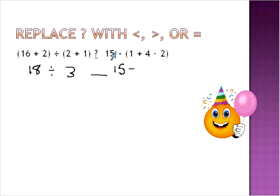The first operation that we'll do inside of these grouping symbols, inside of the parentheses, is the multiplication. We'll do that first, so we end up with 1 plus, 4 times 2 is 8. So 18 divided by 3, we can go ahead and solve that one. And then over here we will have 15 minus 1 plus 8. So in other words, 15 minus 9, and 15 minus 9 is 6.